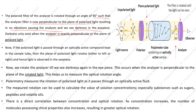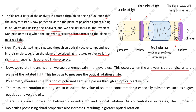Darkness exists only when the analyzer is exactly perpendicular to the plane of polarized light. If polarized light passes through an optically active compound in the sample tube, the plane of polarized light rotates either left or right, and light is observed in the eyepiece. We then rotate the analyzer until we see darkness again — this occurs when the analyzer is perpendicular to the rotated plane. This allows us to measure the optical rotation angle. There is a direct correlation between concentration and optical rotation: as concentration increases, the number of chiral molecules increases, resulting in greater optical rotation.